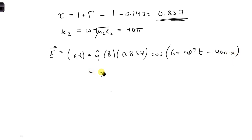So, when we put all this in here, we have y-hat. And simplifying, we get 6.86 cosine 6 pi times 10 to the 9th, minus 40 pi x volts per meter.